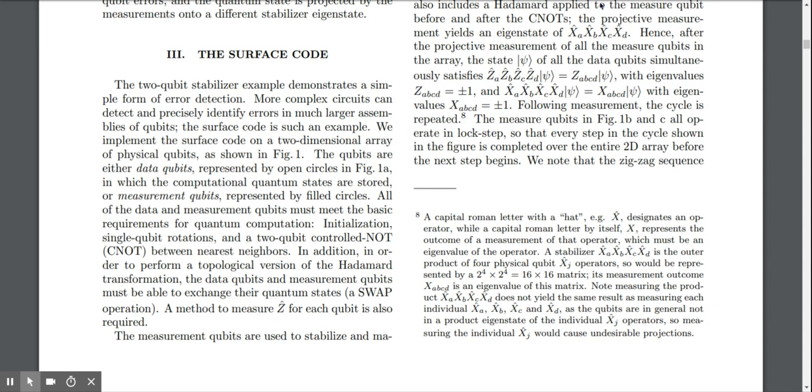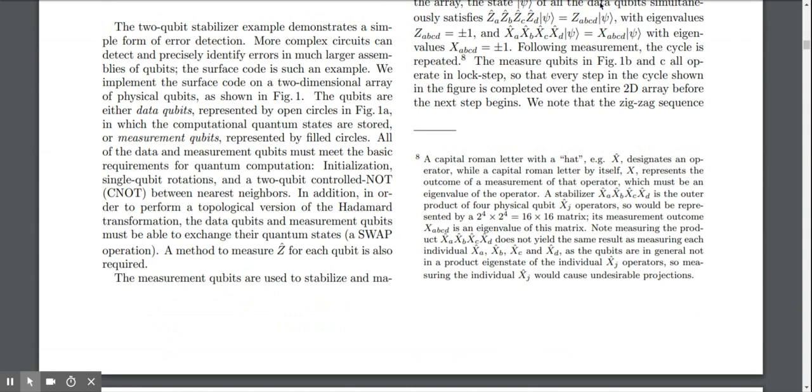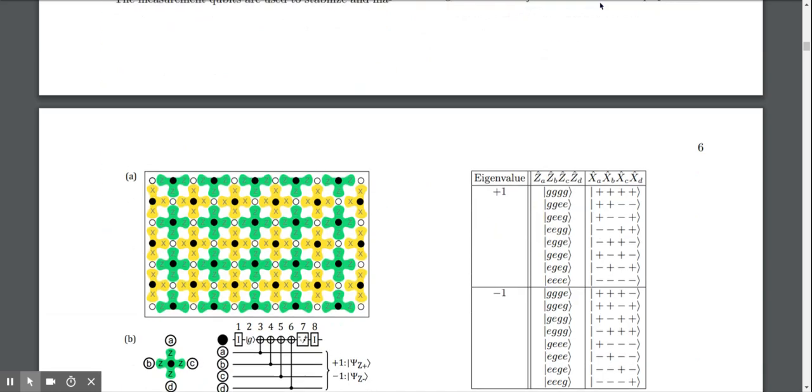The qubits are either data qubits represented by open circles, or measurement qubits represented by filled circles. All of the data and measurement qubits must meet the basic requirements for quantum computation: initialization, single qubit rotations, and two qubit control NOTs between nearest neighbors. In addition, in order to perform a topological version of the Hadamard transformation, the data qubits and measurement qubits must be able to exchange their quantum states—that's a swap operation.